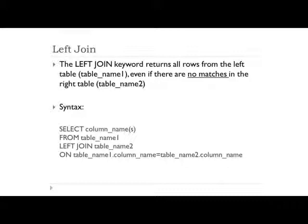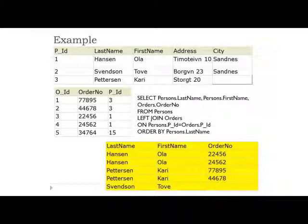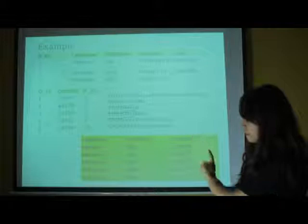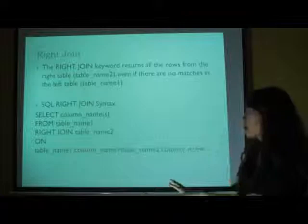We have left join. The left join returns all rows from the left table, even if there are no matches in the right table. As an example, we have the same persons and order's table. We just indicate the left join syntax here. And then the left join returns all the rows from the left table in person's table, even if there are no matches in the right table.